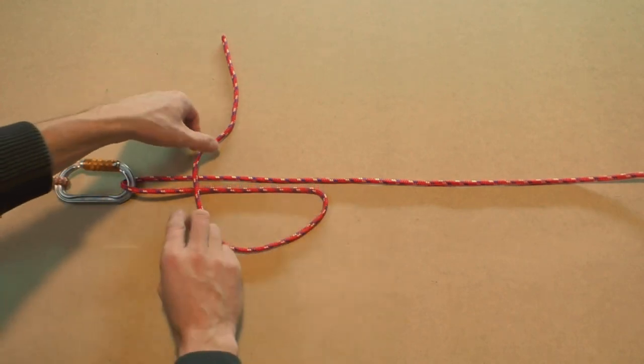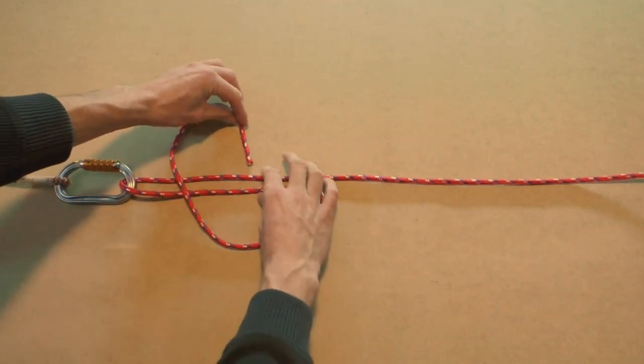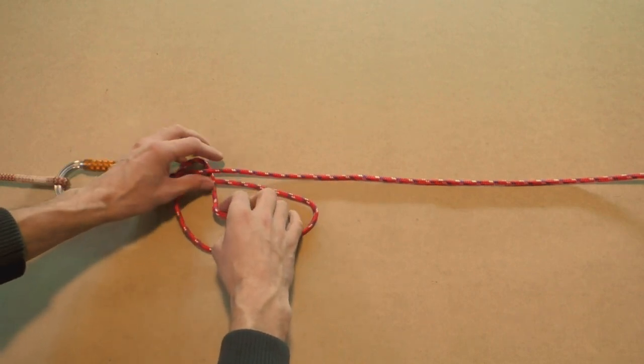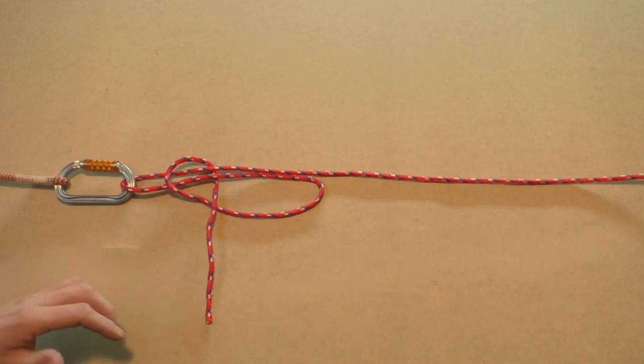Next we start by forming wraps around the standing parts of the knot. Depending on the type of line you are using, form somewhere between 6 and 8 wraps. We are using less wraps because this is for demonstration purposes only.